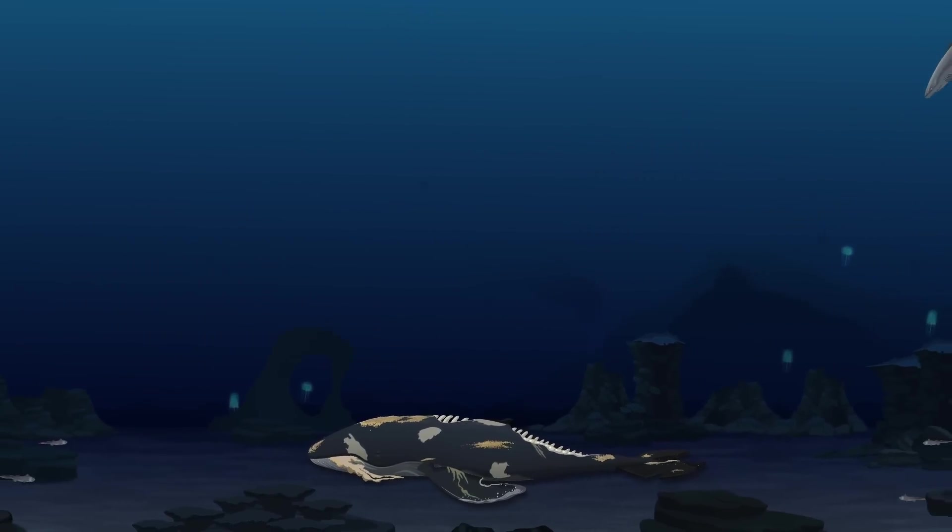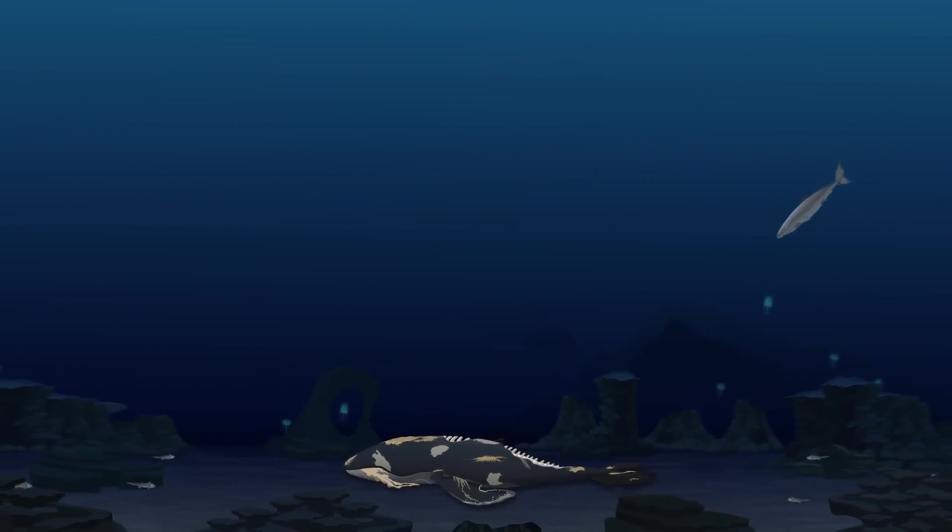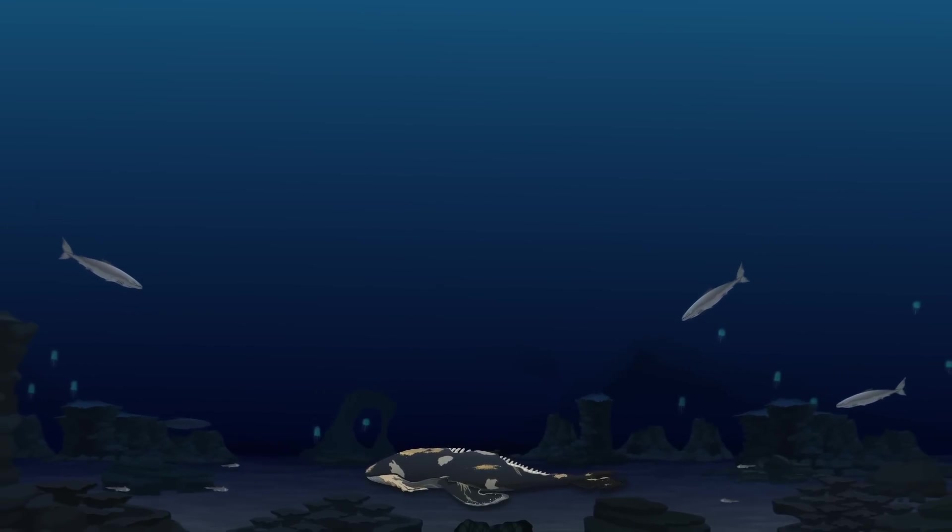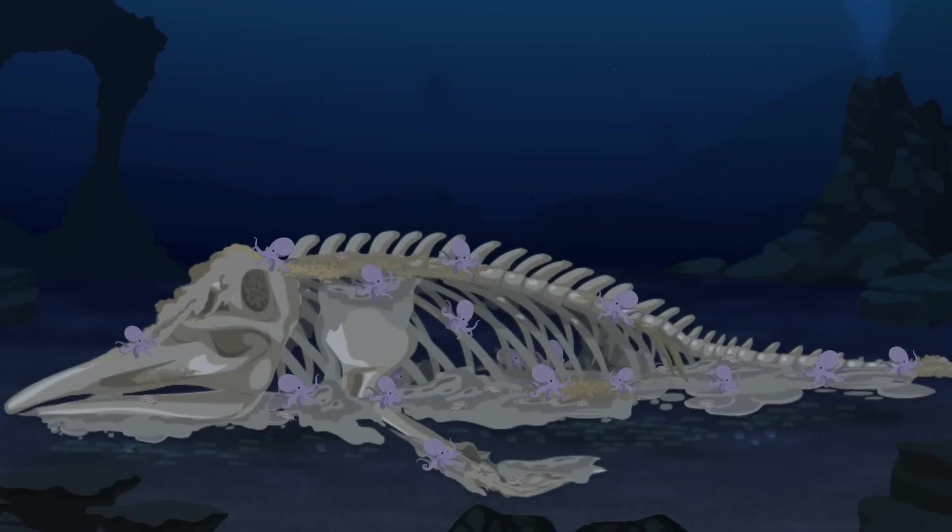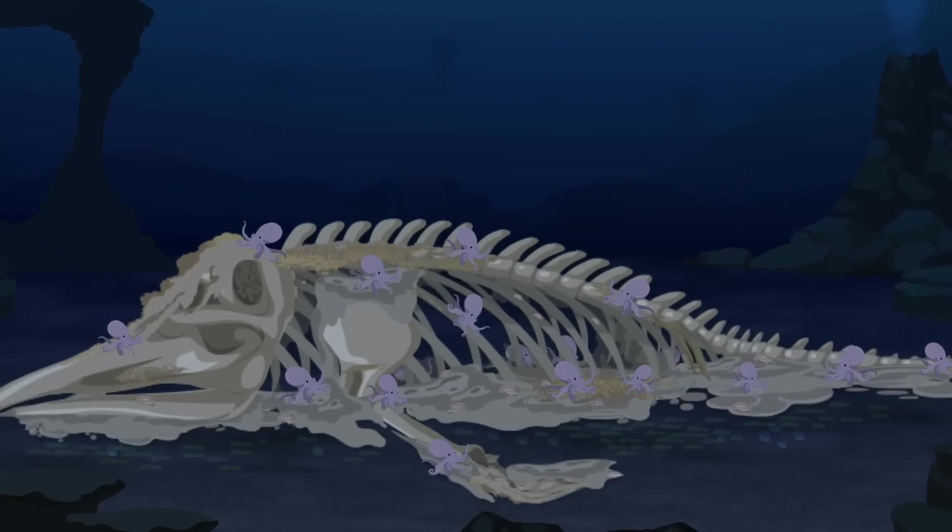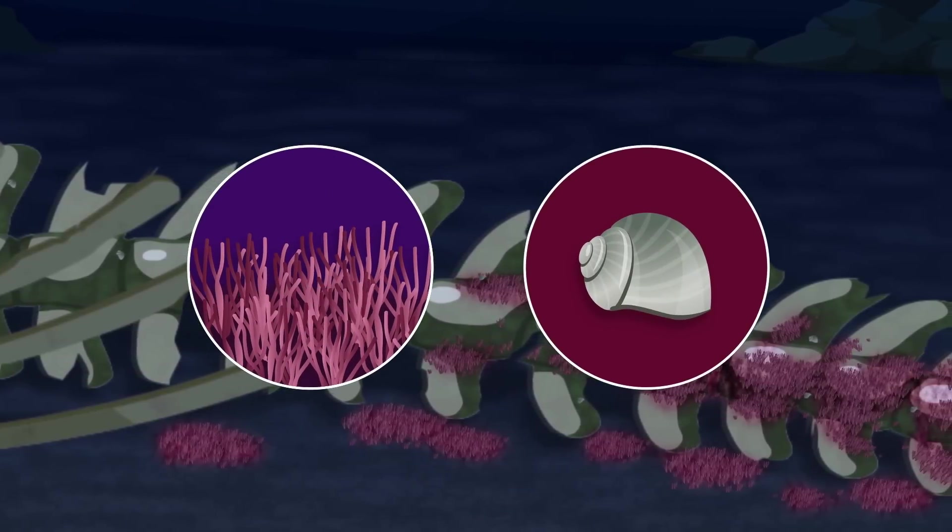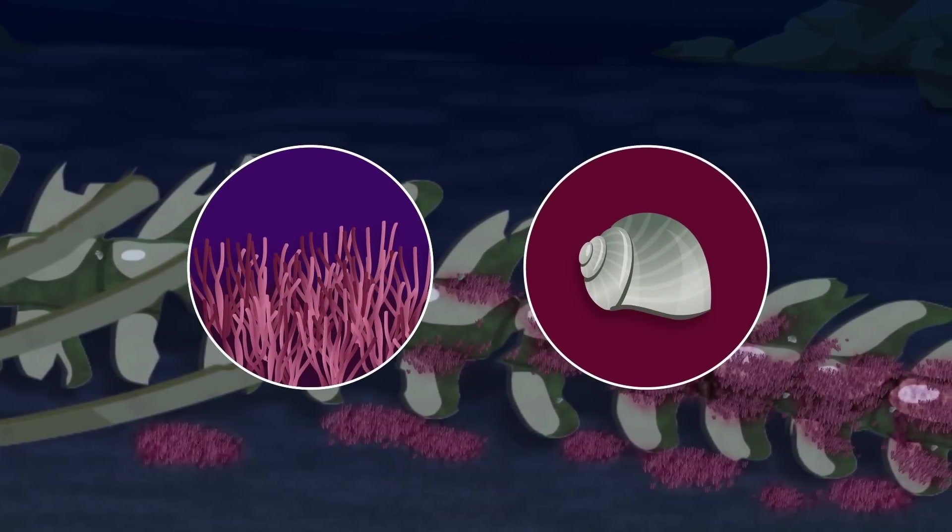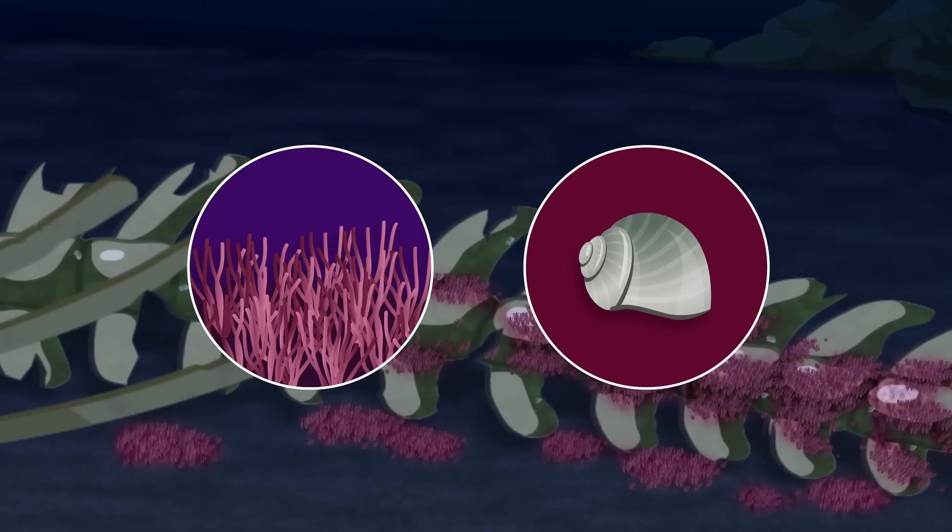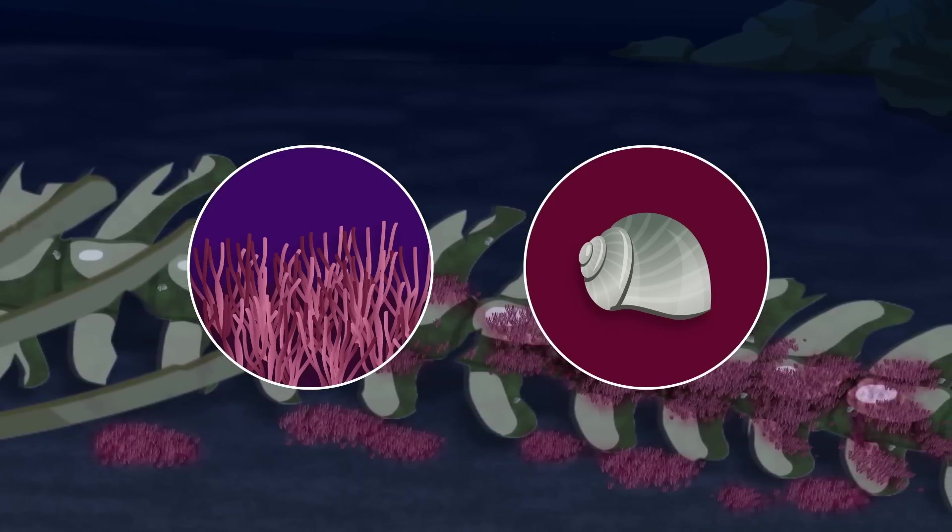One whale fall can feed thousands of creatures for several decades. Attracted by the smell of meat, active swimmers like deep-sea sharks and fish are the first to arrive. Next come the opportunists, like octopi and crustaceans, which pick the whale's carcass clean over many months. Worms and snails feed on the fat and blubber, while bacteria slowly break down the whale's bones. Ultimately, no part of the whale is left behind.